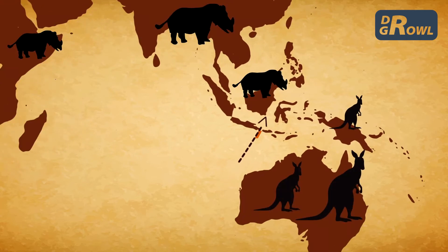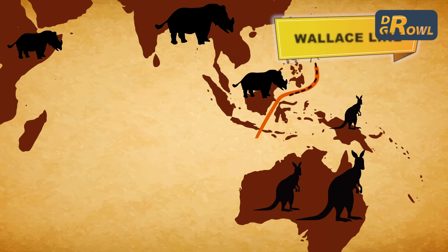This is how the invisible line, which now bears its discoverer's name — Wallace — appeared.